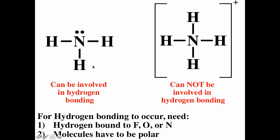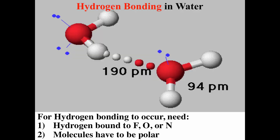Ammonia can undergo hydrogen bonding because it has hydrogen bound to nitrogen. But the ammonium ion cannot, because it's nonpolar. Hydrogen bonding can occur between different types of molecules or the same type. For two water molecules, these bonds are very polar — oxygen is the second most electronegative element, so hydrogen has a partial positive charge and oxygen has a partial negative charge.